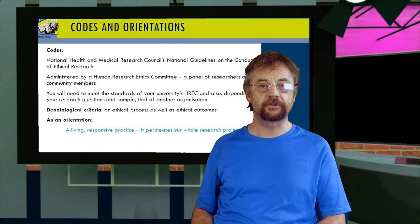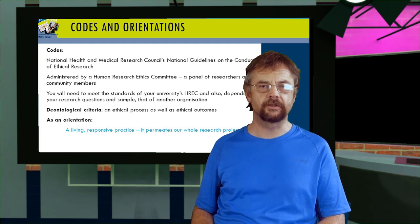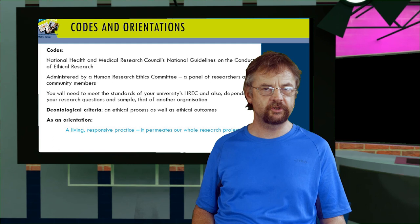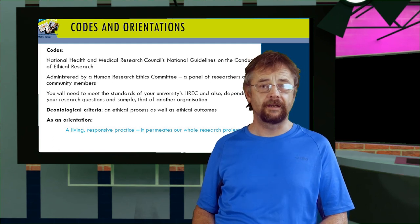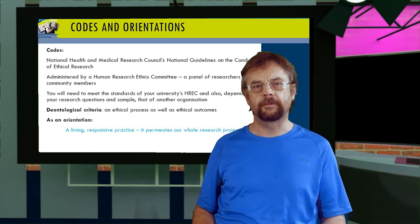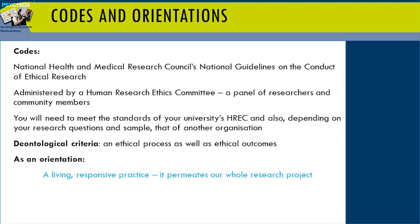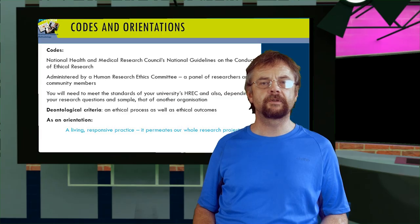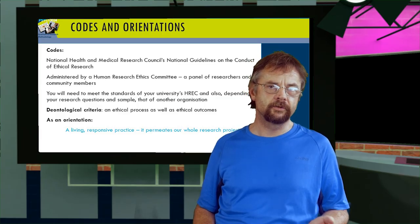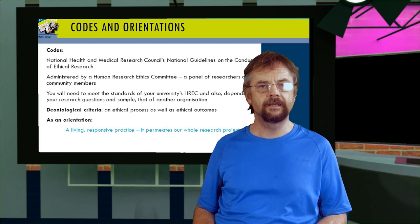Here we're talking about Australian ethical codes that cover research involving human participants. Most jurisdictions outside of Australia have national codes comparable to this one. In Australia, we have the National Health and Medical Research Council guidelines on the conduct of ethical research. This code gives us a set of guidelines within which we must work, and those guidelines are administered in universities by Human Research Ethics Committees — HRECs. When you're doing research in a university setting, you must apply to your university's HREC in the first instance.